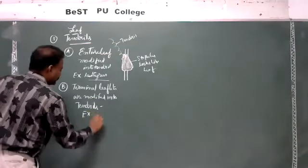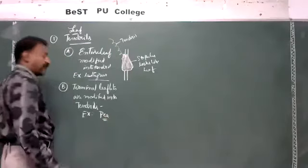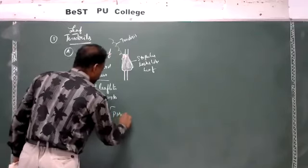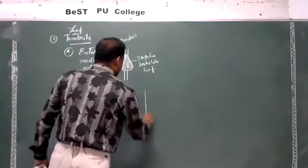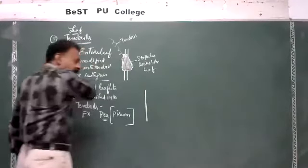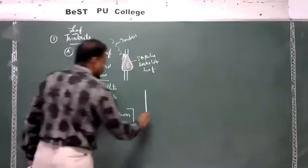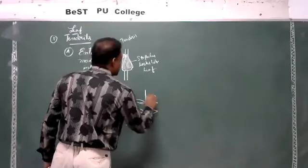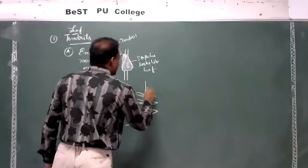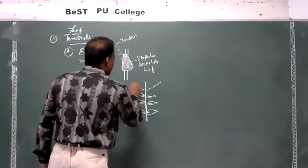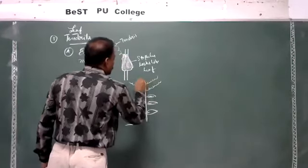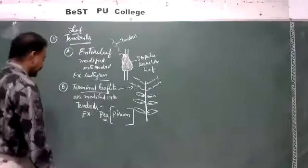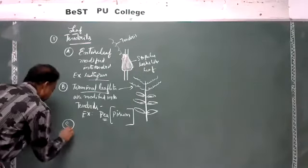The example we have seen is the pea plant, garden pea, Pisum sativum. This is a compound leaf — a unipinnate compound leaf. It is paripinnate, meaning an equal number of leaflets. In this plant, the terminal leaflets are modified into tendrils.